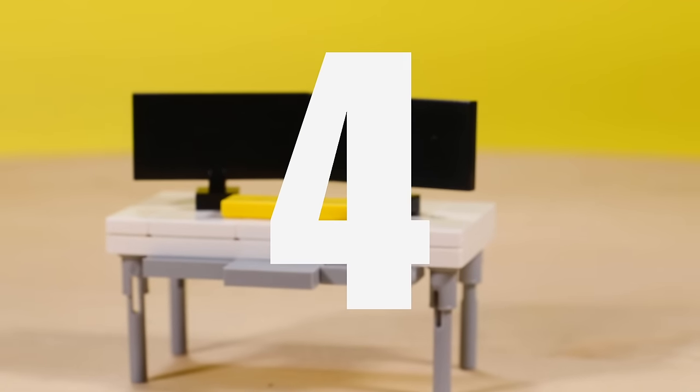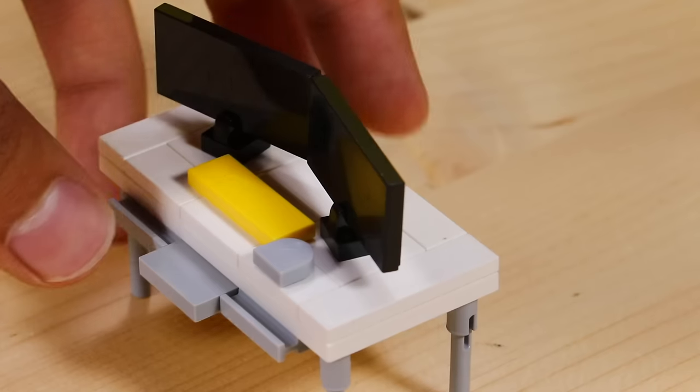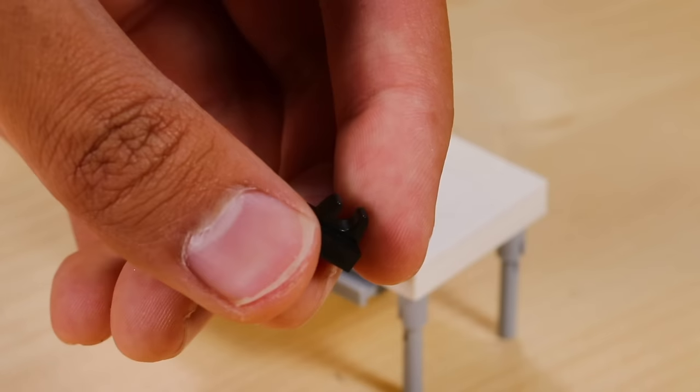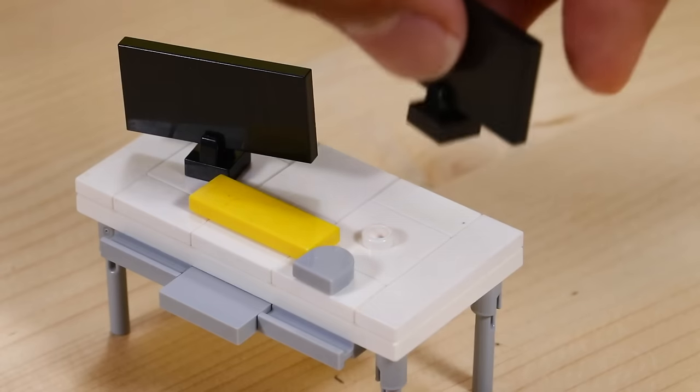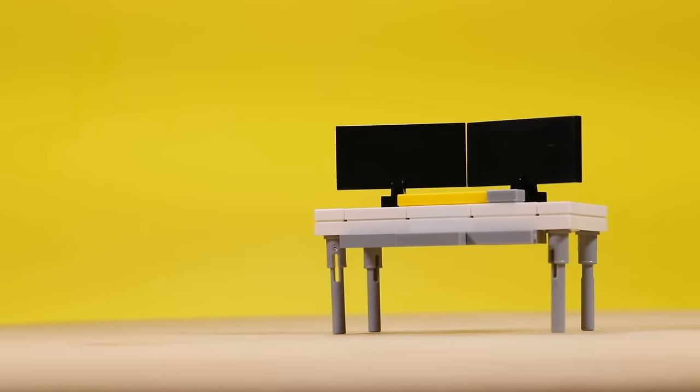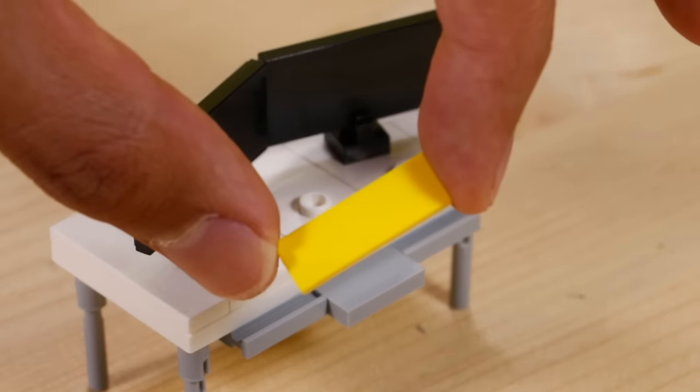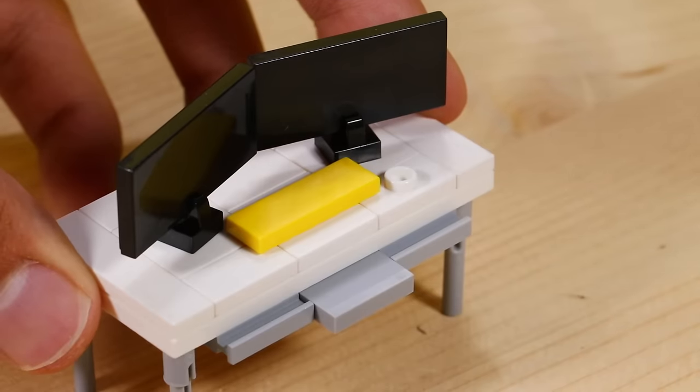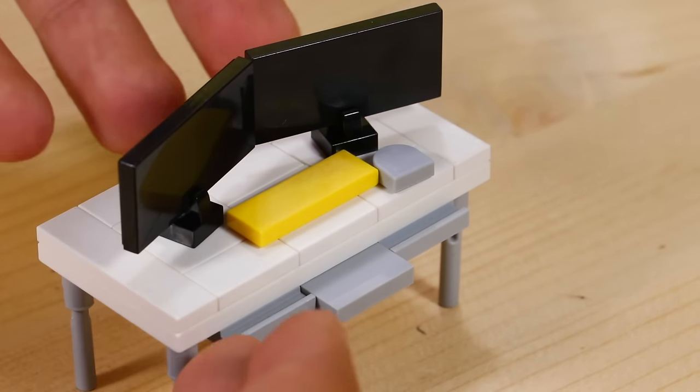For our next design, we have a full-on gaming setup. This is surprisingly really easy to make. For the actual monitors, you're going to take some of these modified plates with the clips on the top. On top of that, you're going to clip a 2x4 tile, and you're going to do that twice because what's better than a one monitor gaming setup? A two monitor gaming setup. And if you want to go super crazy mode, you can actually do three, but I'm not that crazy. To go with the monitor, you can take a 1x2 or 1x3 tile to represent the keyboard and any modified tile to represent the mouse. In this case, I'm using one of these cool 180 degree cornered tiles.